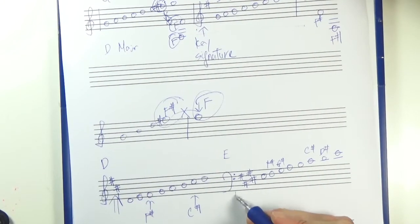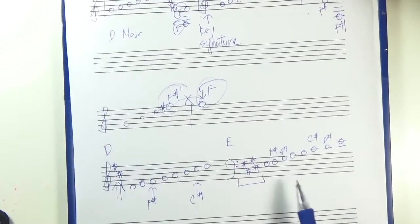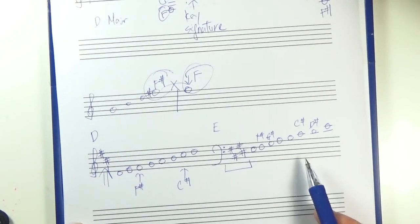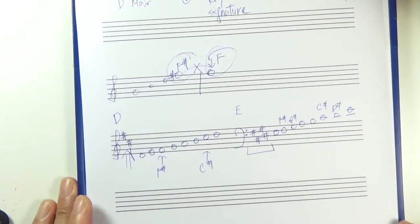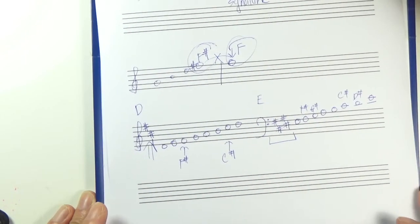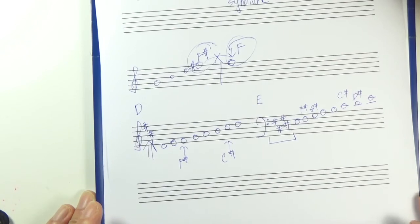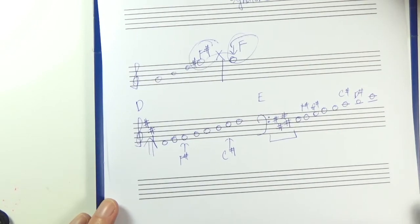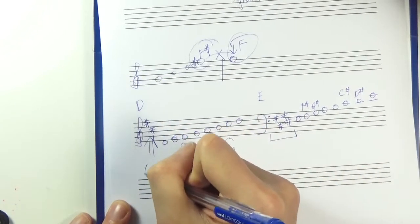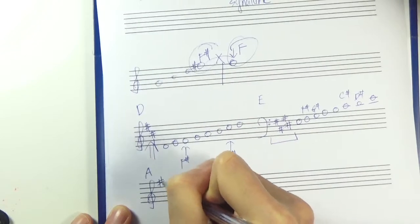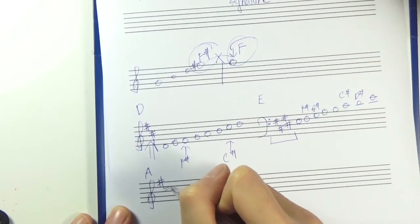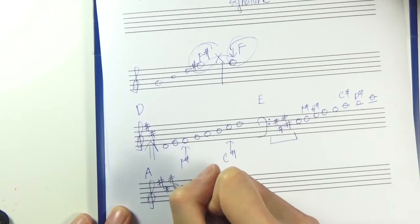So if you put down the key signature, then there's no need for you to individually put down any sharps. Unless you are trying to modulate to other keys, which is a whole new topic on its own. Alright. Let's do just one more. Let's do A major. So you will have F sharp, C sharp, and then G sharp.